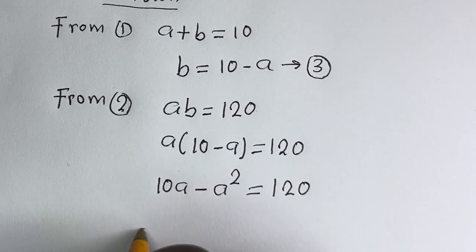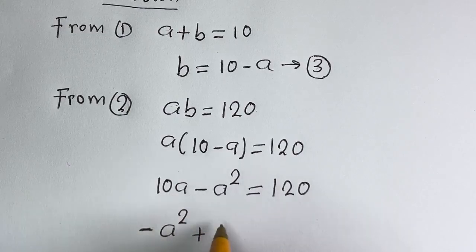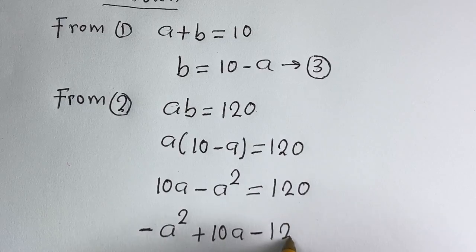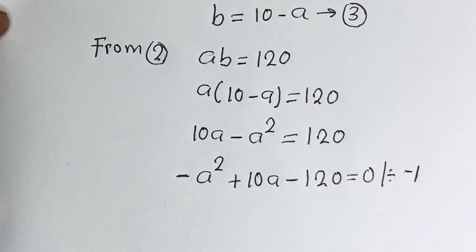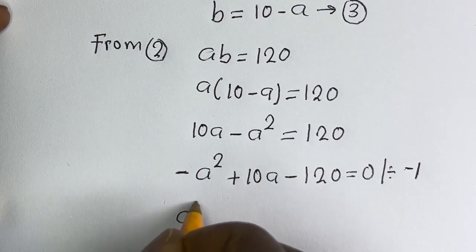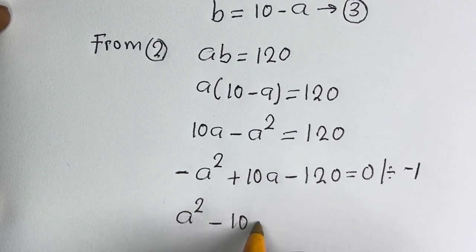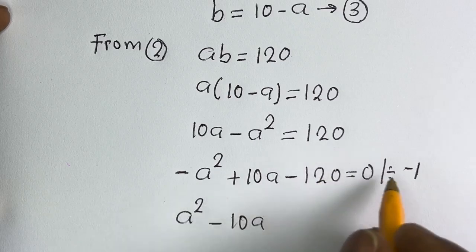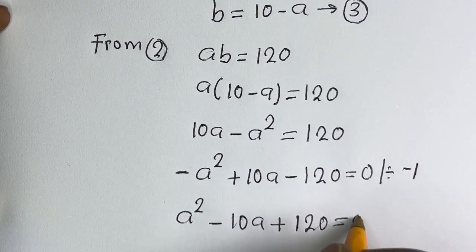This gives minus A squared plus 10A minus 120 is equal to 0. Dividing all terms by minus 1: A squared minus 10A plus 120 is equal to 0.